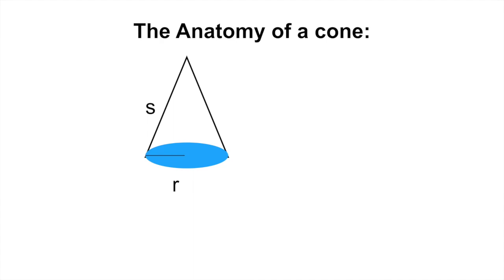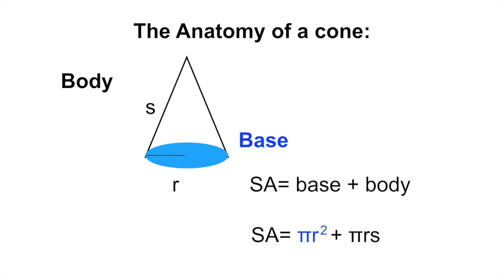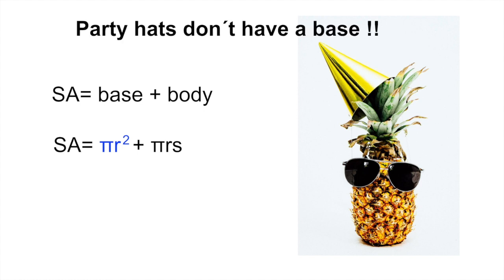So when you look at a cone it essentially consists of two parts. A body which is that part in white which is the curved part, and then the base which is in blue. So if you were to calculate the surface area of a cone you would take the base plus the body. So in this case the base is equal to pi r squared and the body is pi r multiplied by the slant height or s. So we are talking about party hats and the thing with party hats is that they don't have a base. So you can immediately for this question eliminate the base from your equation.